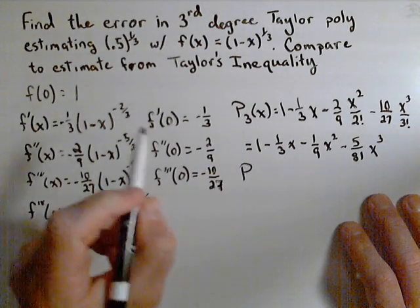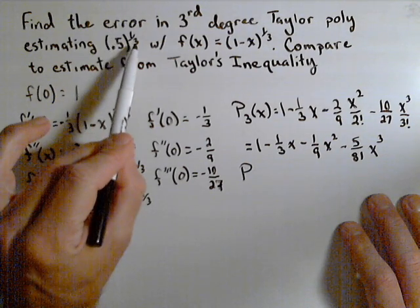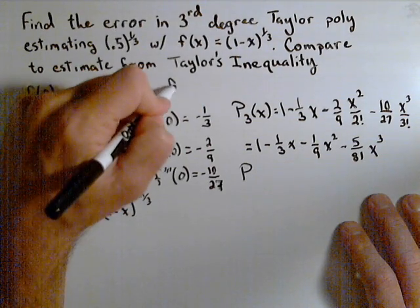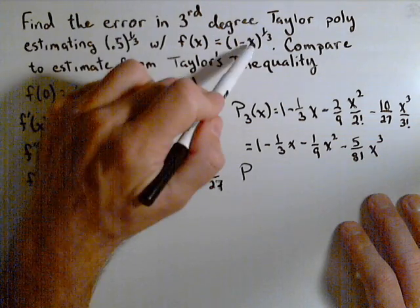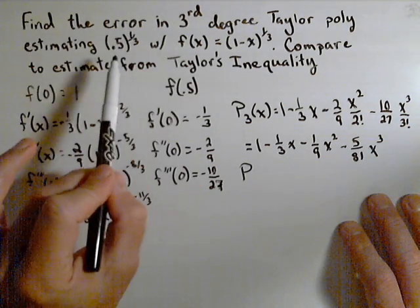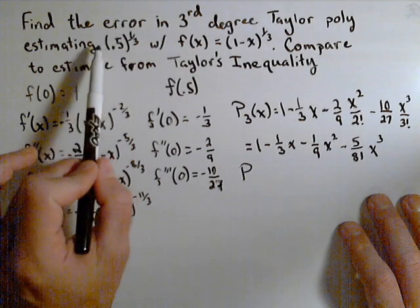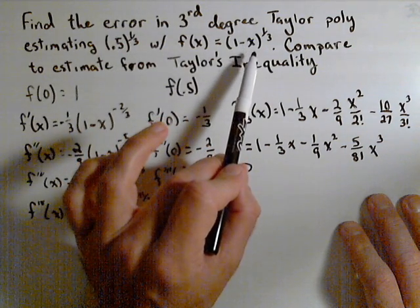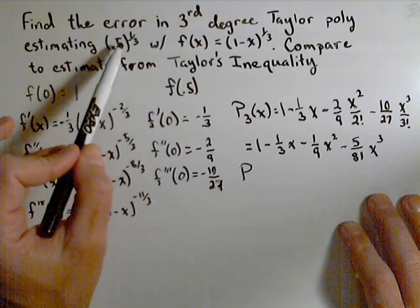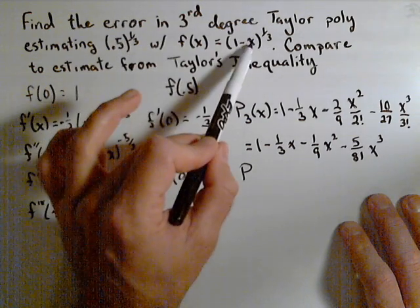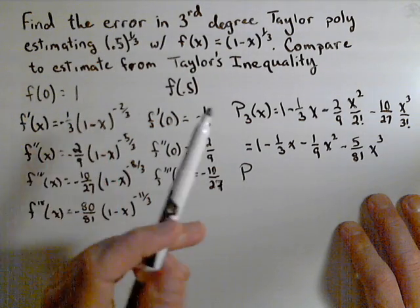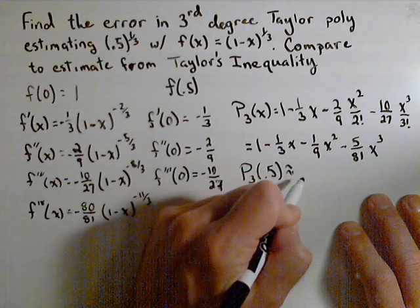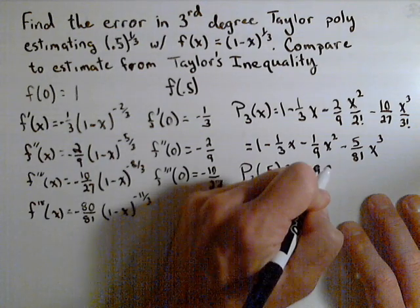So there's our third-degree Taylor polynomial. Now, what we wanted to estimate was 0.5 to the one-third. So for our function, we want to estimate f of 0.5, because putting 0.5 in for x would give us 0.5 to the one-third. So you got to be careful about that on these kind of problems. If this had been estimating 0.2 to the one-third, then x would have actually been 0.8. So it's because it's 0.5 that it seems like this is the same 0.5 as this, but actually this is x, and one minus x is what gives us this 0.5.